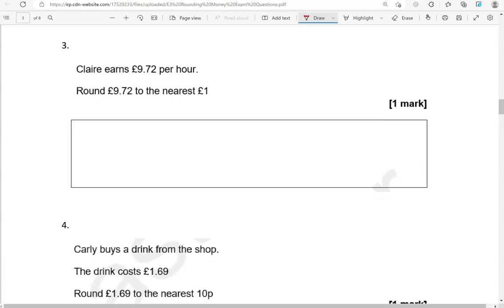Claire earns £9.72 per hour. Round £9.72 to the nearest £1. So £9.72, pounds, that's the digit that represents the pounds. So this will be the cut-off point. To decide whether we keep this as £9 or round it up to £10, we look on the right. We've got 72 pence. Again, 50 pence and above will mean rounding up.